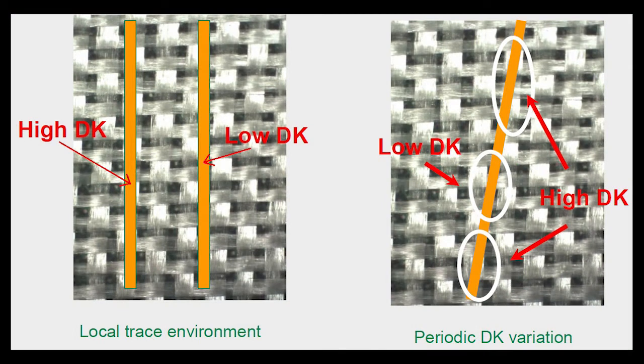The picture on the left shows the glass fabric used in making a laminate. A conductor drawn across it in two different locations is labeled: one 'high decay,' aligned directly over the glass bundles and therefore seeing a higher dielectric constant; and 'low decay,' going between the openings in the glass bundle pattern and seeing a lower dielectric constant because it has less glass beneath it. The difference between high and low decay is really just how much glass is beneath the conductor.